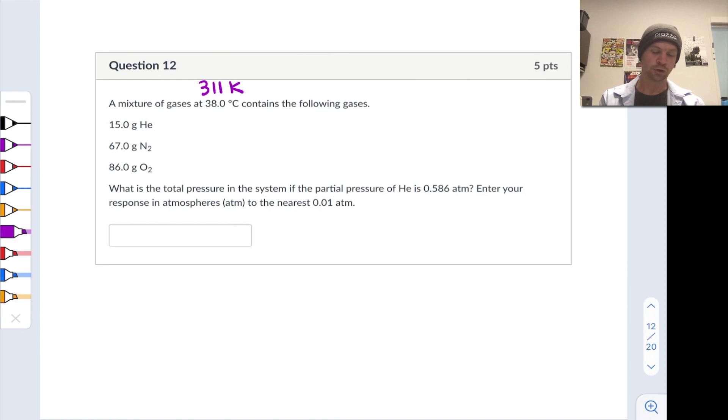We're interested in the total pressure of the system, so the sum of the three partial pressures according to Dalton's law, given that the partial pressure of helium is this value. I'm going to write that the partial pressure of helium, P_He, equals 0.586 atmospheres.